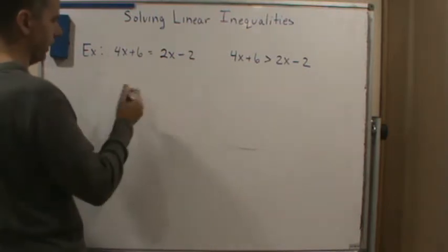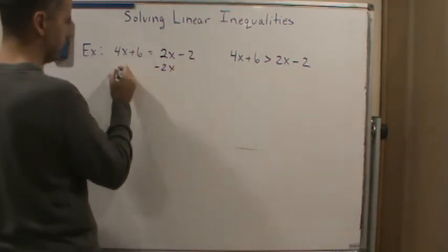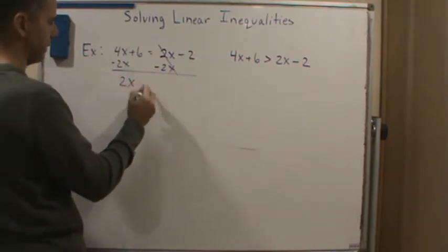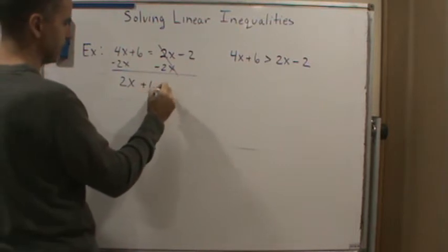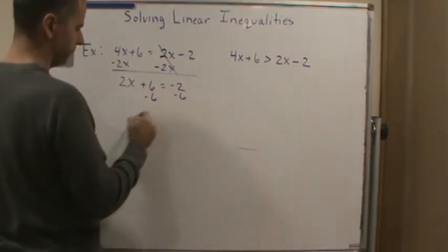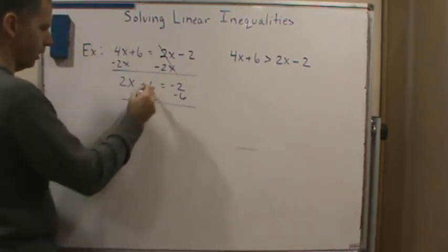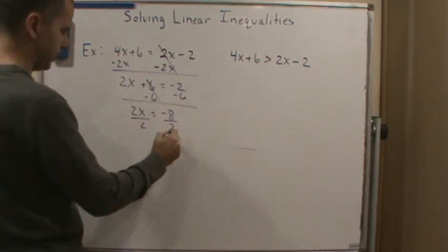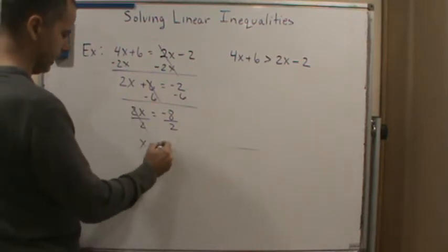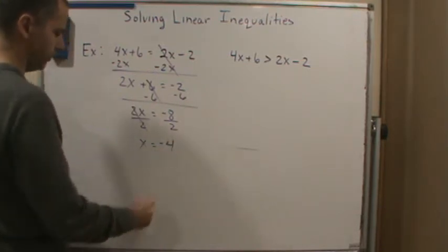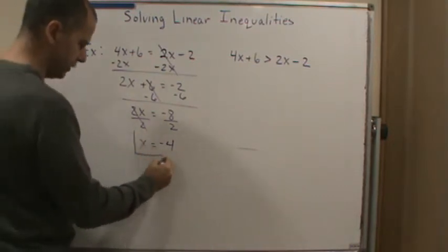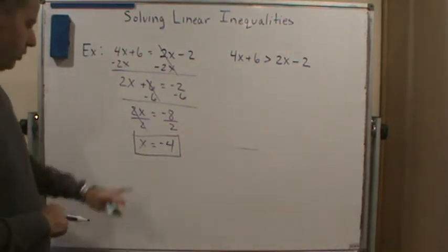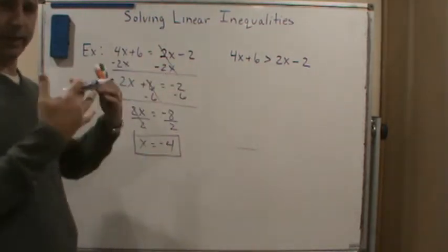So we have this. I'm going to subtract 2x from both sides, so that gets rid of that, and we get 2x plus 6 equals negative 2. So then I'm going to subtract 6 from both sides, and I get 2x equals negative 8. Then I divide both sides by 2, and I get x equals negative 4. So this is my solution — one number. It's telling me that x is equal to negative 4. If I stick negative 4 back in, I'm going to get a true statement.